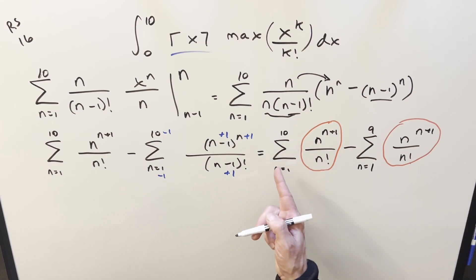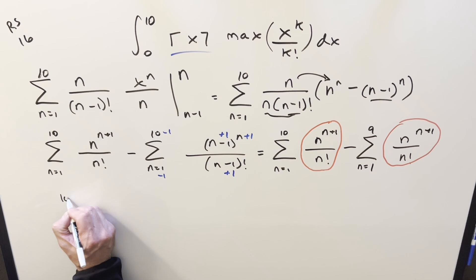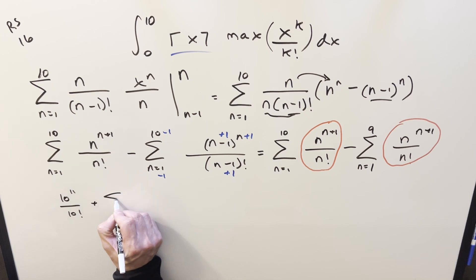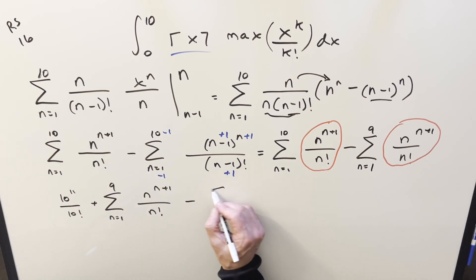But let's make it a little more clear. I'm going to break out that 10 term separately. So at 10, when n is 10, it's going to be 10 to the 11 over 10 factorial plus just the rest of the sum up to 9 now because we pulled off that 10 term. And then we'll just leave this one exactly as it is.